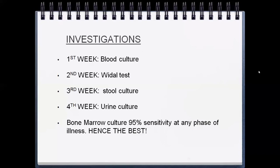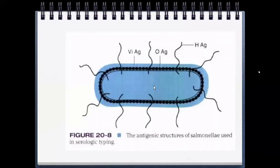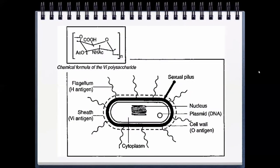Other investigations may show moderate anemia, mildly raised ESR, and low platelet count (thrombocytopenia). Total white cell count is low (neutropenia), with neutrophils reduced and relative lymphocytosis — for example, total count of 4000 with neutrophils at 35–40 percent and lymphocytes at 75 percent. Liver enzymes and serum bilirubin will be raised to twice the reference range in the first and second week.